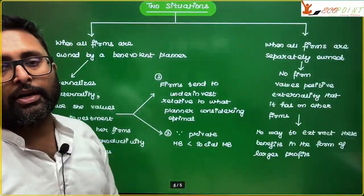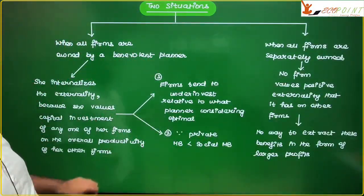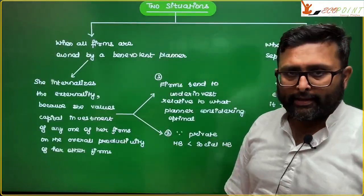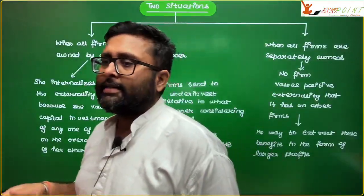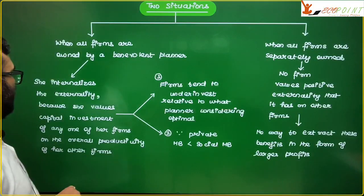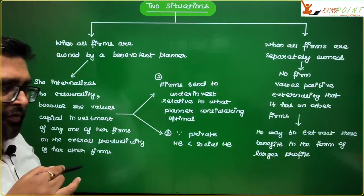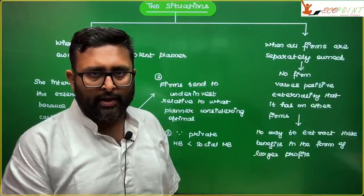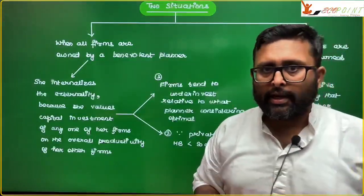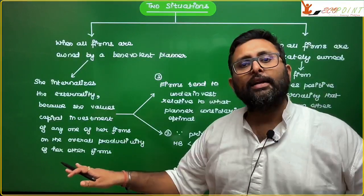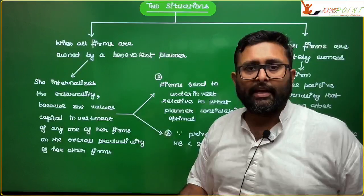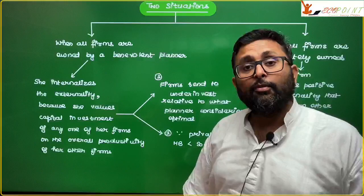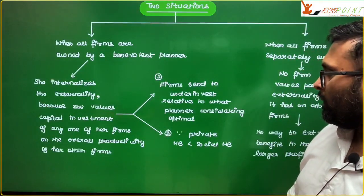There are two situations which are going to arise. Government is sort of internalizing the externality. Internalizing the externality would mean that in case if one of our firm is going to invest in the capital formation, this is going to have the positive effect on the other firms. So, this government knows that if my one firm invests, because all firms are my part, and my one part is going to invest, then my other parts will also be benefited. They will get positive externality. So, this way, I am internalizing the externality that government thinks like that. And such a government is owning all the firms in the economy.